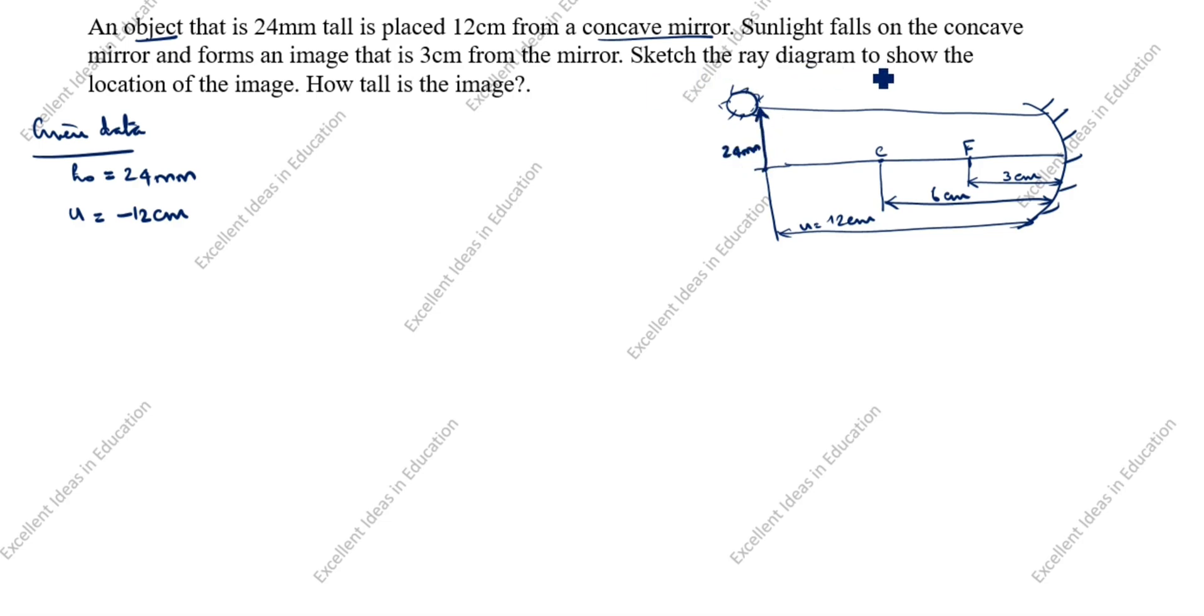Sketch the ray diagram to show the location of the image. We do not know the image distance, so we need to find that. To find image distance we need to find how tall is the image. So HI we need to find. After that, we will draw the ray diagram.